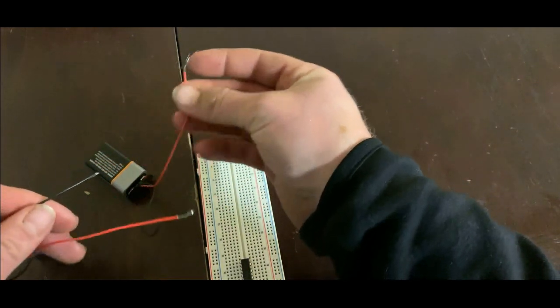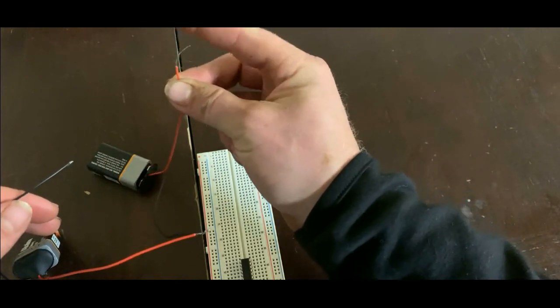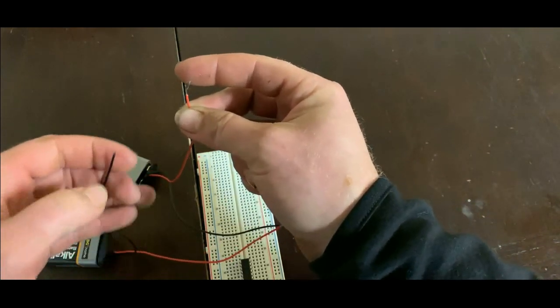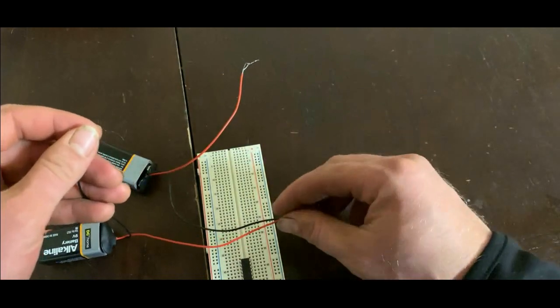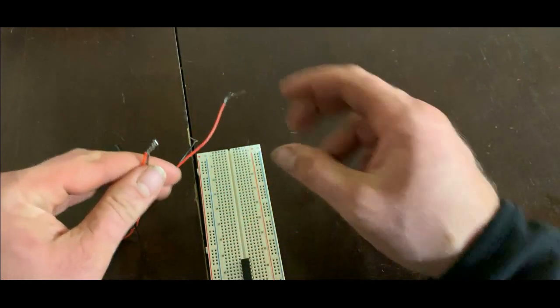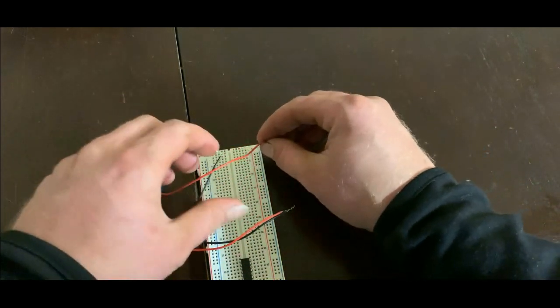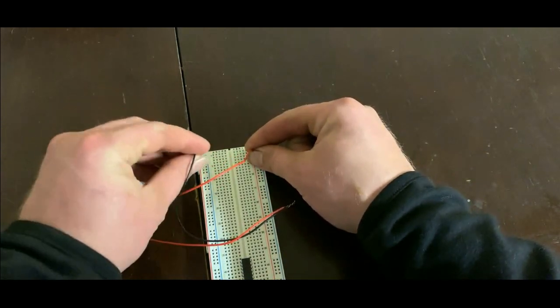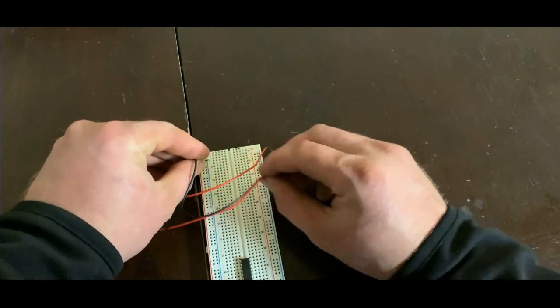And then, this is your positive voltage here, the red one. And the black one is your negative voltage. And this is your virtual ground. So you can just plug this in. Positive voltage, negative voltage, virtual ground.